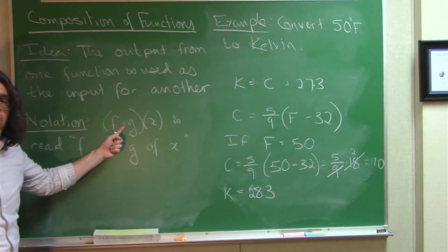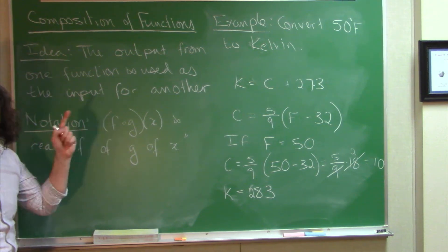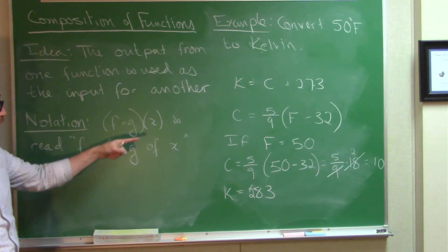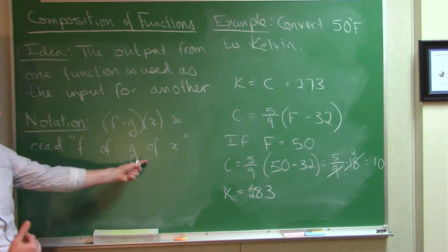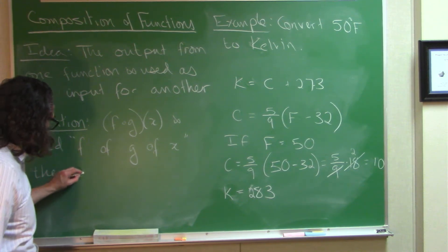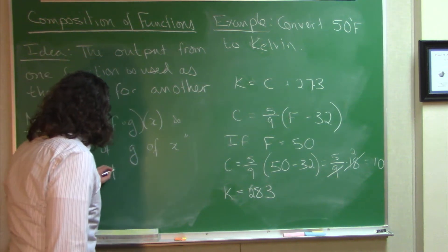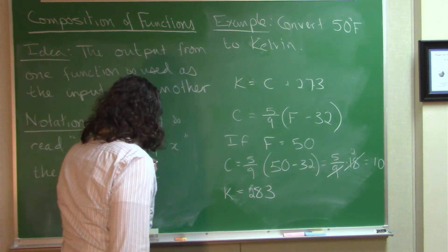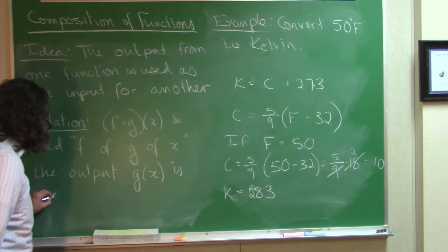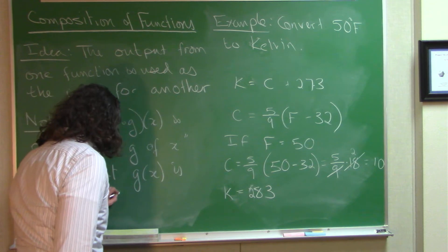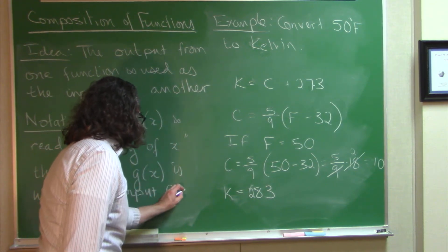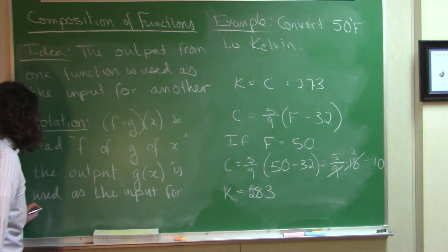Okay, it's a little open circle between the two functions. So, you might read it F circle G of X or F of G of X. And the output G of X is used as the input for F.